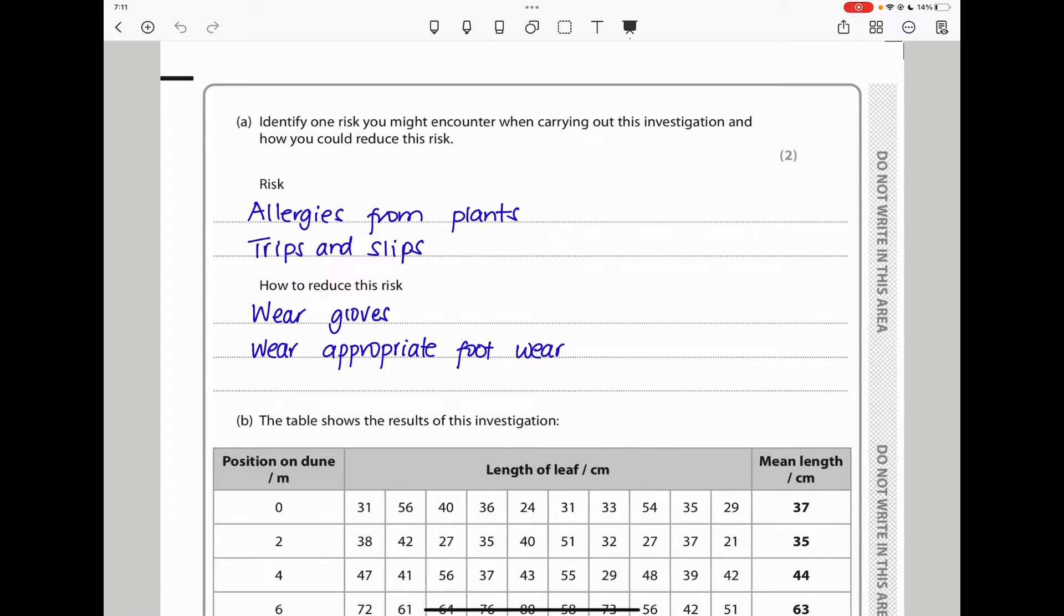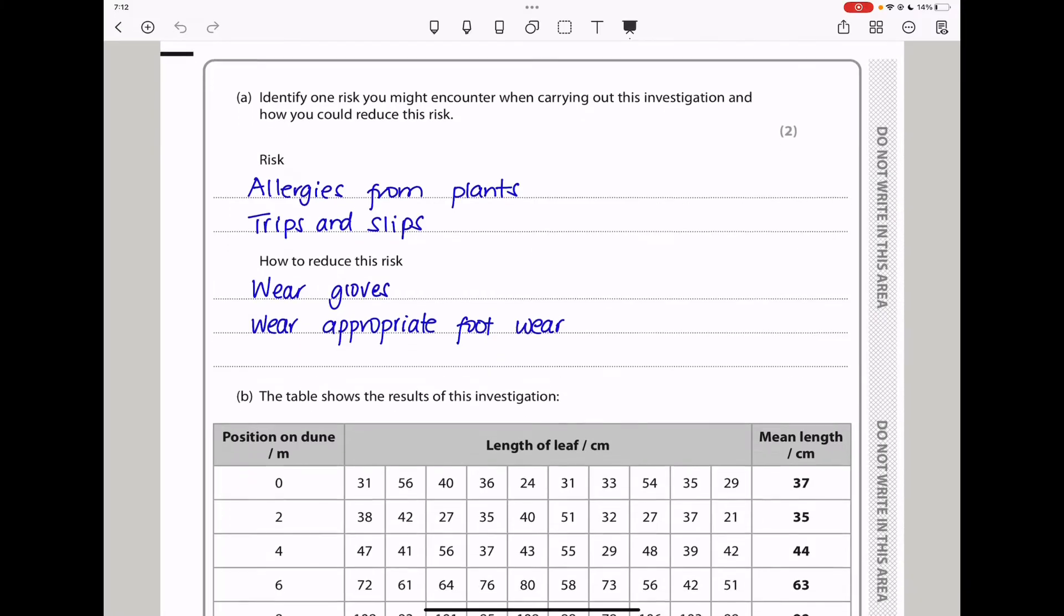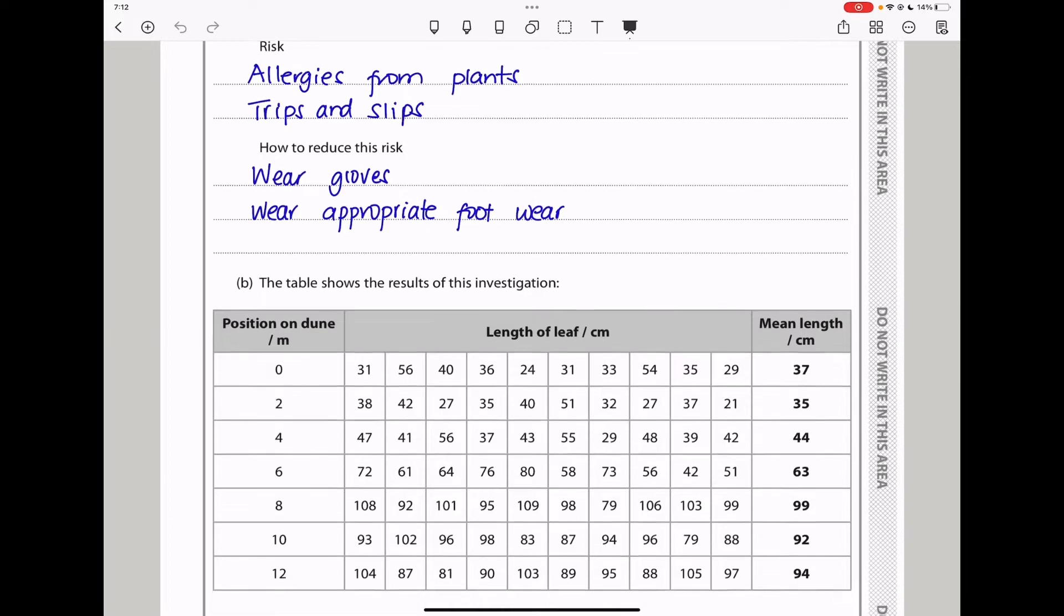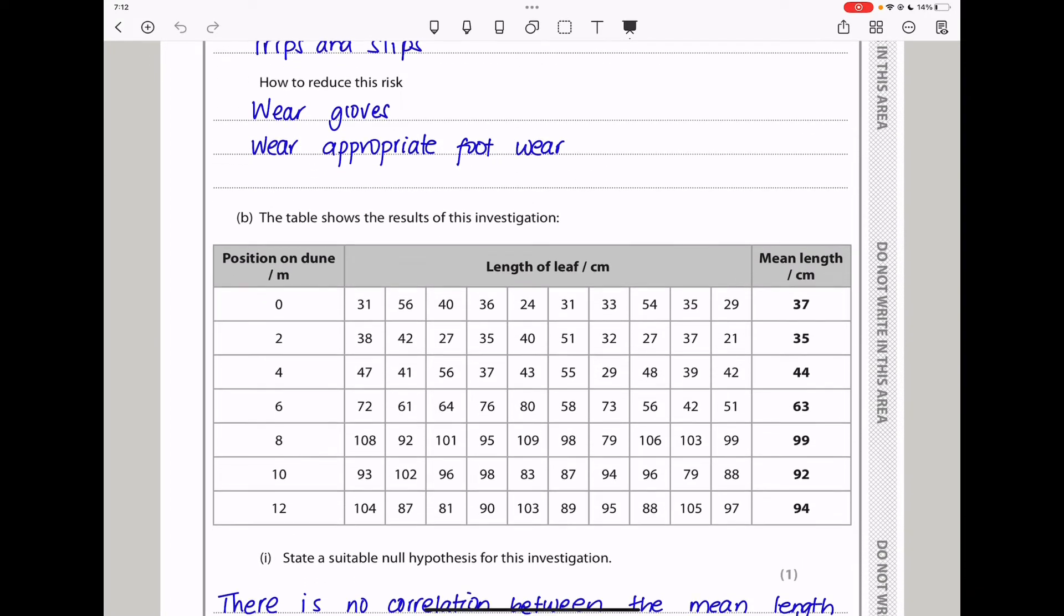Here they say, identify one risk you might encounter when carrying out this investigation and how you could reduce this risk. The risk is some plants could have allergens meaning they can cause allergic reactions on the person who is working with them. Also there could be trips and slips because this is a dune so you have to take great care in order not to fall. How can we reduce this risk? You need to wear gloves in order to prevent the allergens from touching your skin. And you need to wear appropriate footwear in order not to slip.